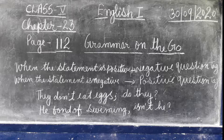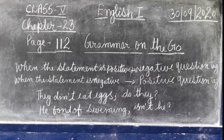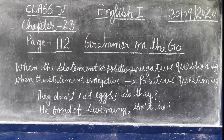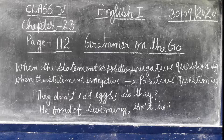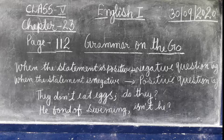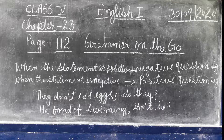'Any' means some quantity or number. It is used in negative sentences or questions. For example: 'Are there any flowers?' — making a question using 'any.' 'I do not have any money' — a negative sentence using 'any.'